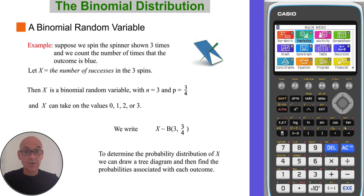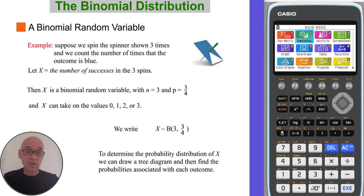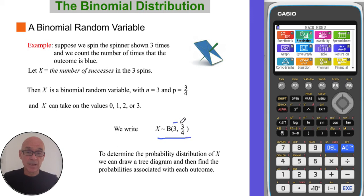In our example with the spinner, suppose we spin it three times and count the number of times that the outcome is blue. X is the number of successes in those three spins, so X is a binomial random variable where n, the number of trials, is three and the probability of success is three quarters. X can take on the values 0, 1, 2, and 3. We write X follows a binomial distribution with three trials and probability of success three quarters.